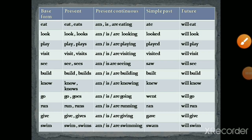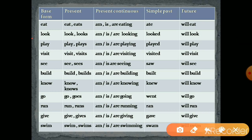Exercise C: Complete the verb table with the different forms of each verb — base form, present, present continuous tense, simple past tense, and future tense. First example, verb 'eat': present tense — eat/eats; present continuous tense — am eating, is eating, are eating; simple past tense — ate; future tense — will eat.